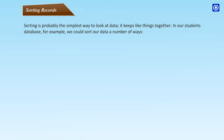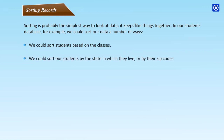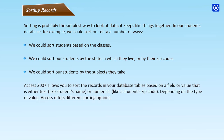Sorting Records: Sorting is probably the simplest way to look at data — it keeps like things together. In a students' database, you could sort data by classes, by state, by zip code, or by subjects. Access 2007 allows you to sort records based on a field value that is either text, like a student's name, or numerical, like a student's zip code. Depending on the type of value, Access offers different sorting options.